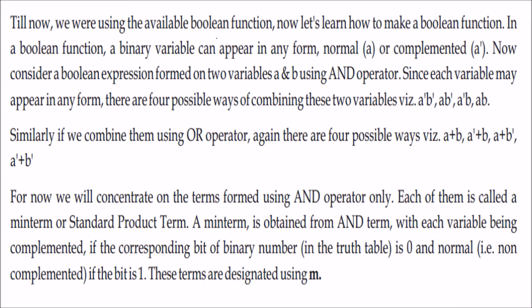Boolean functions have binary variables which can appear in normal form or complement form, meaning a and a-dash. If we have two variables a and b with an AND operator between them, a and b can come in 4 possible ways: a-dash b-dash, a b-dash, a-dash b, and a b. Similarly, with OR (plus), the combinations are a plus b, a-dash plus b, a plus b-dash, a-dash plus b-dash.